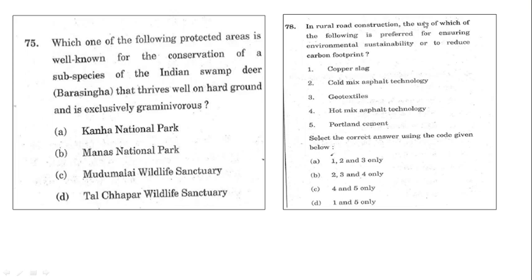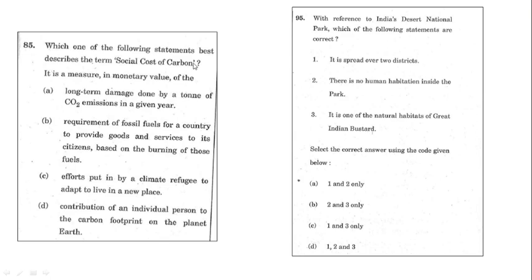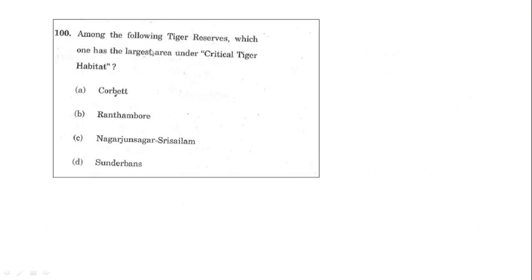Further 2020 prelim questions covered: coal ash containing arsenic, lead, and mercury; coal-fired power plants releasing sulfur dioxide and nitrogen oxides; high ash content in Indian coal. Also the Wildlife Protection Act Schedule VI, the social cost of carbon, India's Desert National Park, and which tiger reserve has the largest critical tiger habitat — with choices of Corbett, Ranthambore, Nagarjunasagar, and Sundarbans.